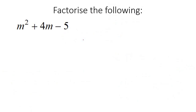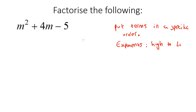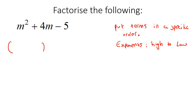Here's our first example. This is a trinomial because exactly two of the terms have variables, and this exponent is a two and this one's a one - exactly double. Now, when you have confirmed it's a trinomial, put the terms in a specific order: write them from the highest exponent down to the lowest. Here we have two, one, zero - it goes from high to low. Then we are going to make two brackets.